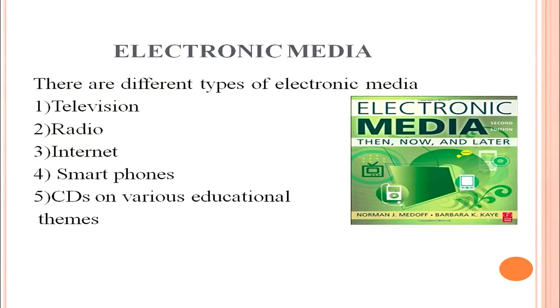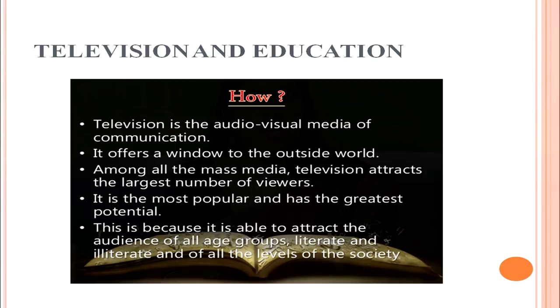The third learning resource is electronic media. There are different types of electronic media: television, radio, internet, smartphones, and CDs on various educational themes. The first is television — an audio-visual media of communication that offers a window to the outside world. Among all mass media, television attracts the largest number of viewers and has the greatest potential because it is able to attract audiences of all age groups, literate and illiterate, across all levels of society.